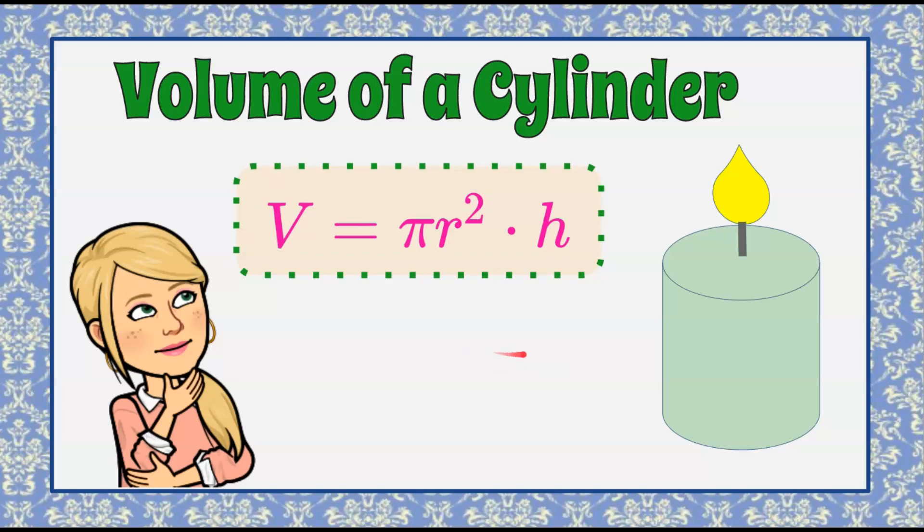Magic of Math here and today we're going to find the volume of a cylindrical candle using the formula V equals pi r squared multiplied by h.